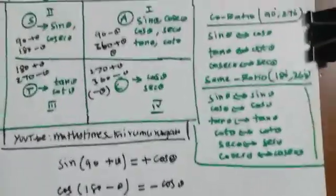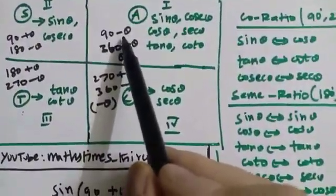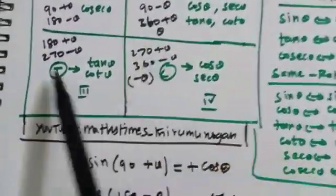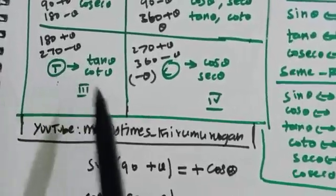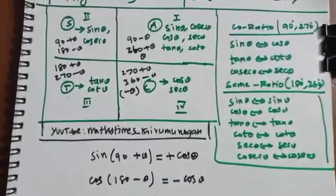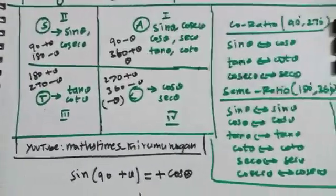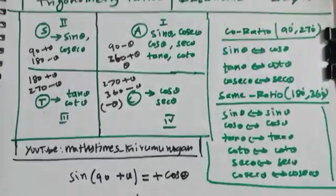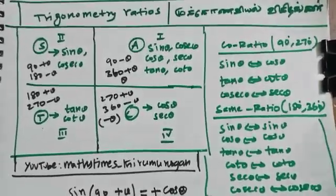We can apply this formula for 90 minus theta, 90 plus theta, and 270 minus theta. We can use these as basic concepts, as easy as possible. We can do this with these basic concepts as well.